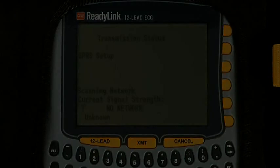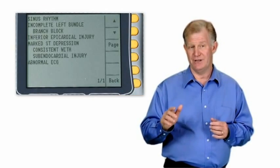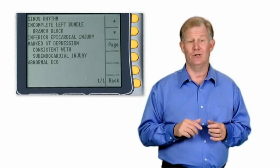What we just went through is, of course, an ideal scenario. There may be times when you are trying to transmit a 12-lead and you do not have a cellular signal. If the device cannot transmit, it will automatically retry — the factory default is three retries. If for some reason you are not able to get back to an area of coverage, you might need to verbally communicate the interpretive statement. To do so, push the INTERP button and read off the interpretive statement.